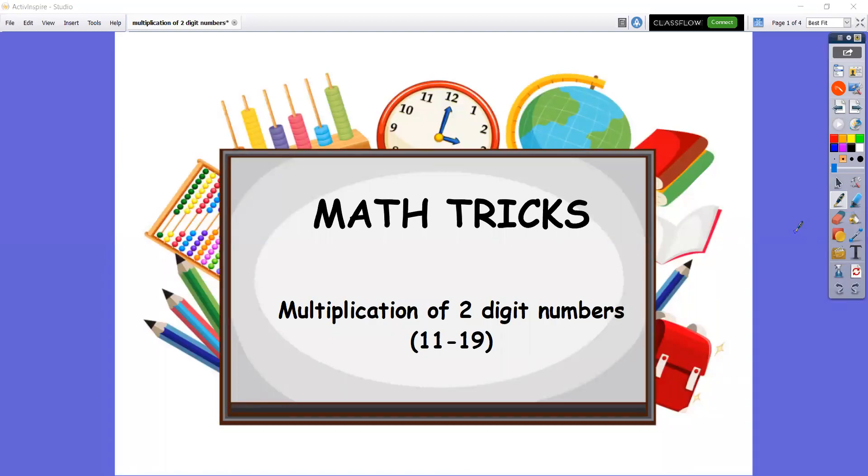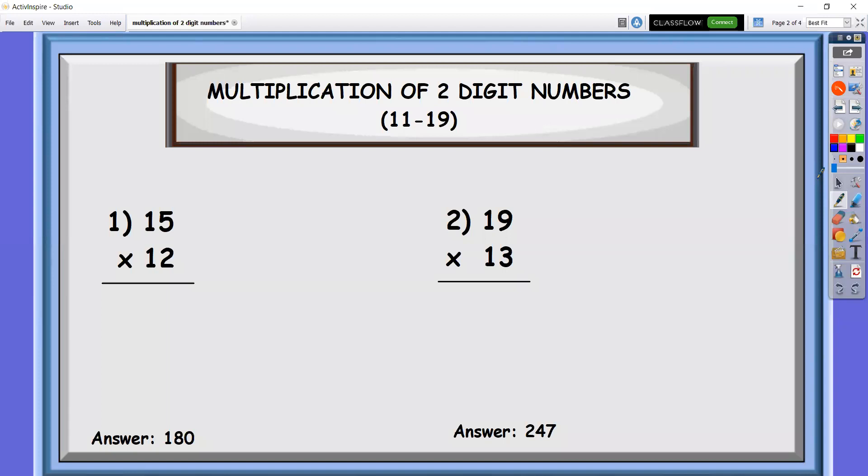The next math trick that we're going to have is the multiplication of two-digit numbers and that is restricted from numbers 11 to 19. Let's look at the two examples here.